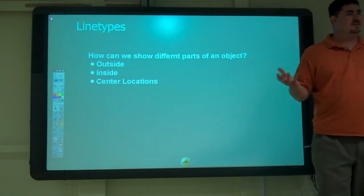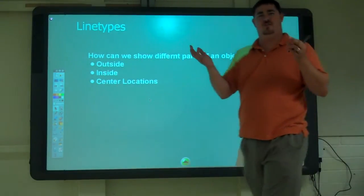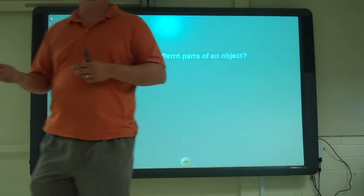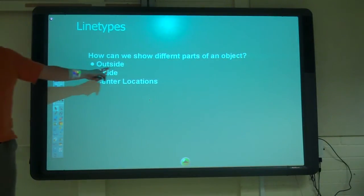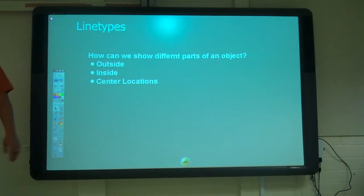Alright, so a big issue with drafting is how do you show what you need to show about a part? We have three basic rules: you need to show the outside of a part, you need to show the inside of a part, and you need to show centers of things.